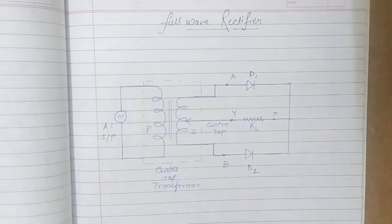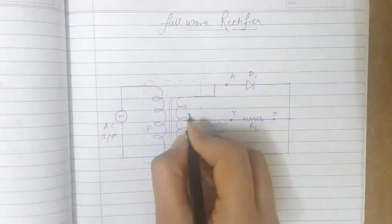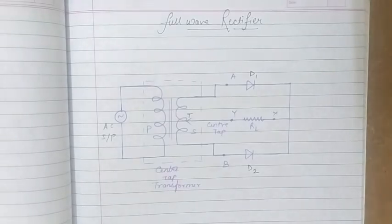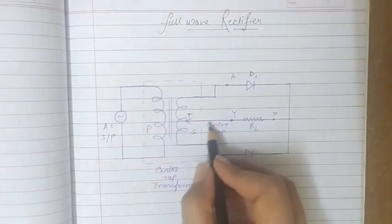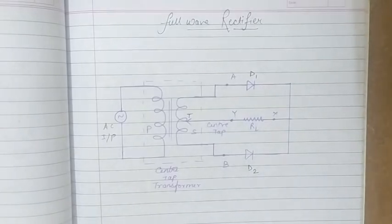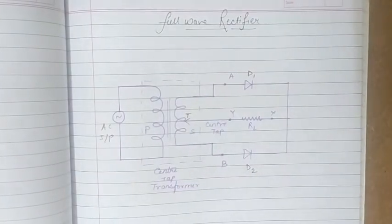The secondary coil is center-tapped at the central point T. This central point T is connected to the N ends of both diodes. The load resistance RL is connected across the output.